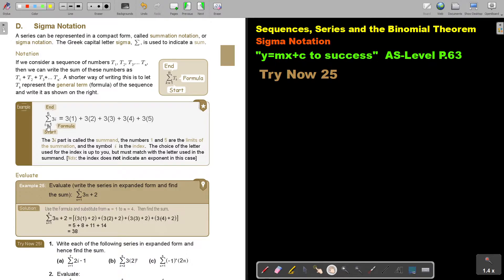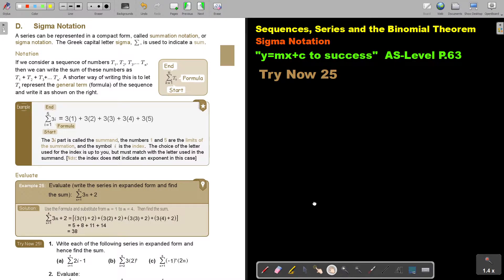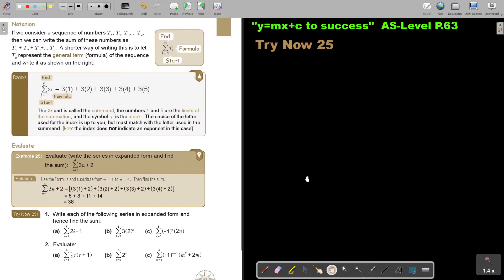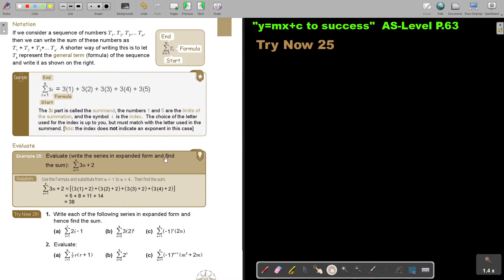So this is very important. You can use other letters, they can use R, but then they will use R there. Or they will use M, and then they will use M there. That is actually what it's saying. But let's look at an example. Even height, that means write the series in expanded form and find the sum. There. There's the formula.